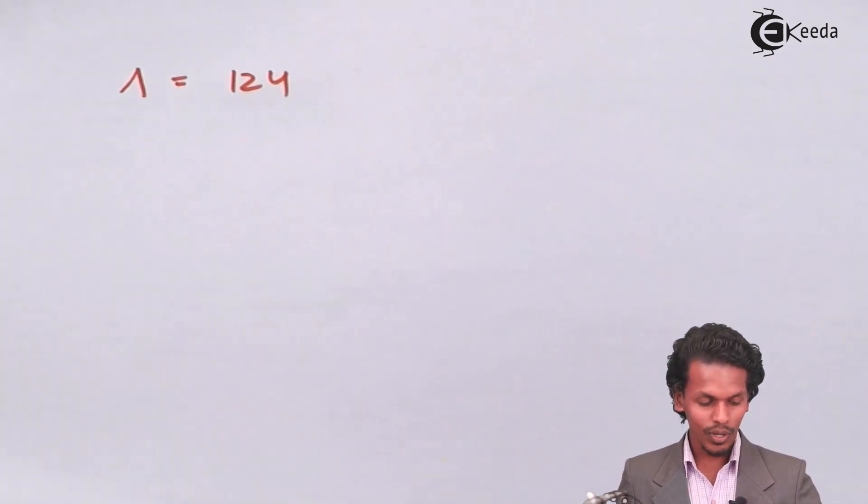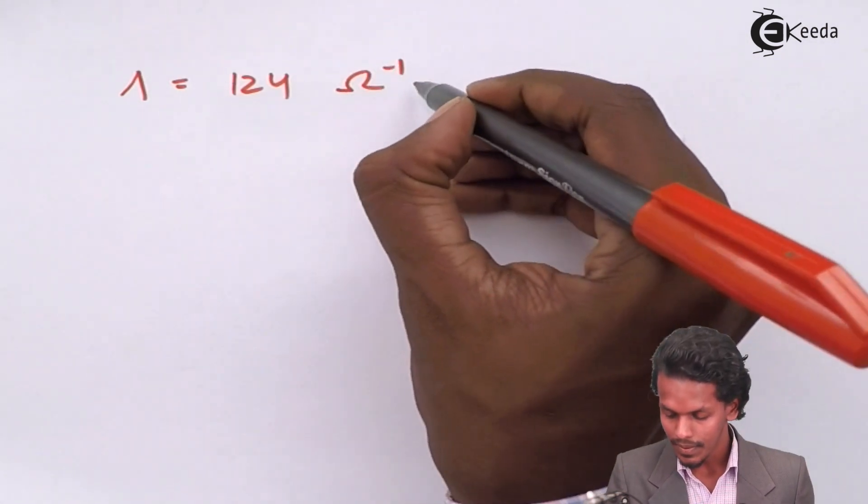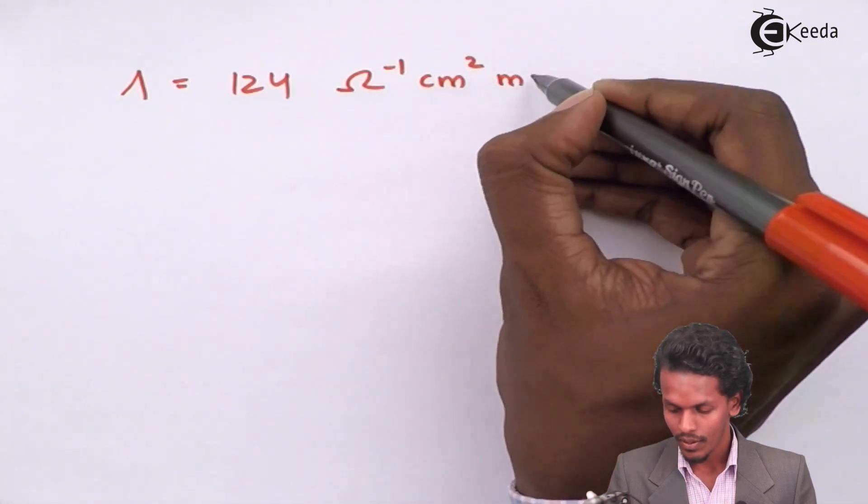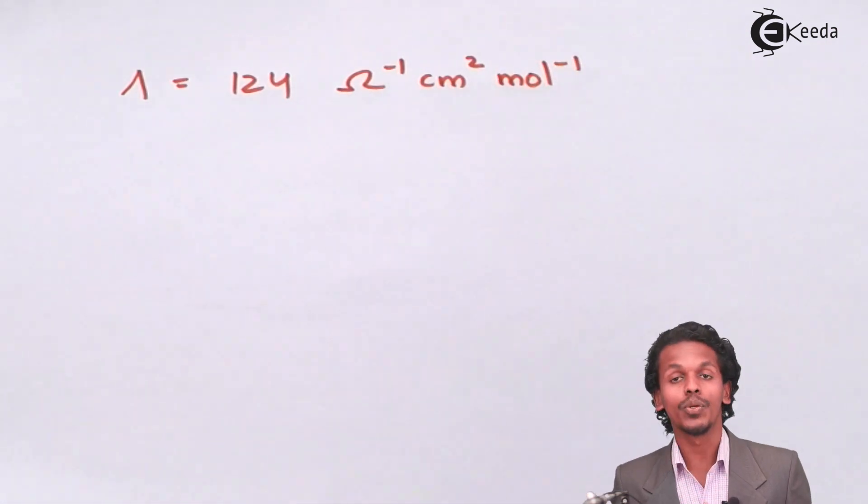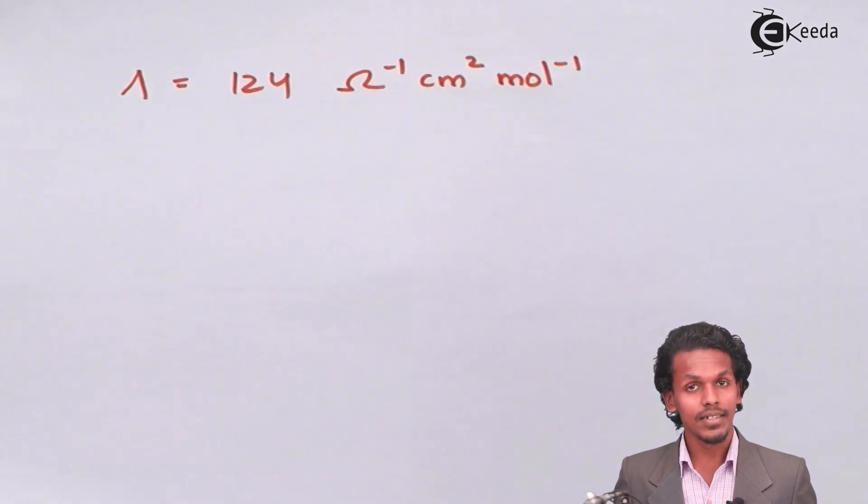The unit of this molar conductivity will be ohm inverse centimeter square mole inverse. This is the unit of molar conductivity that we initially derived in the definitions also.